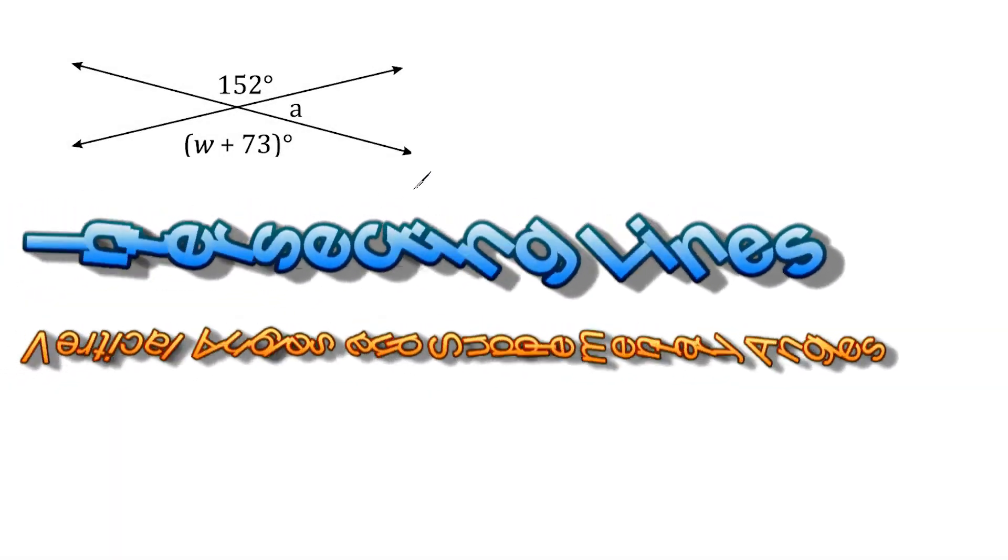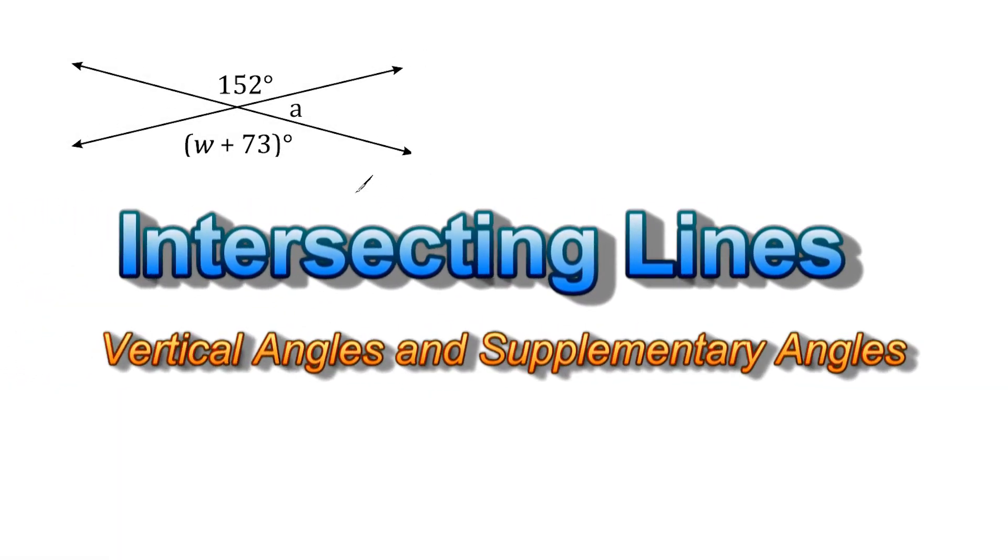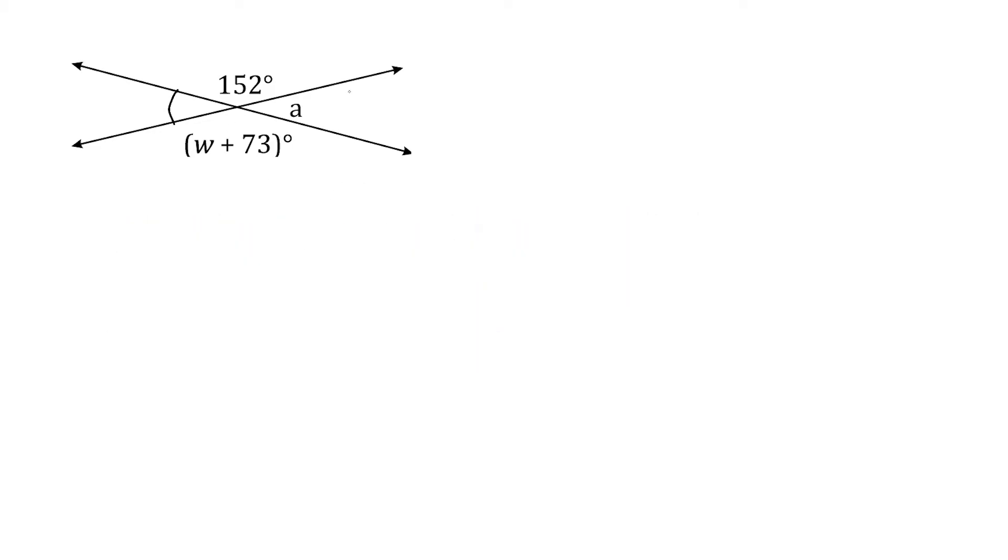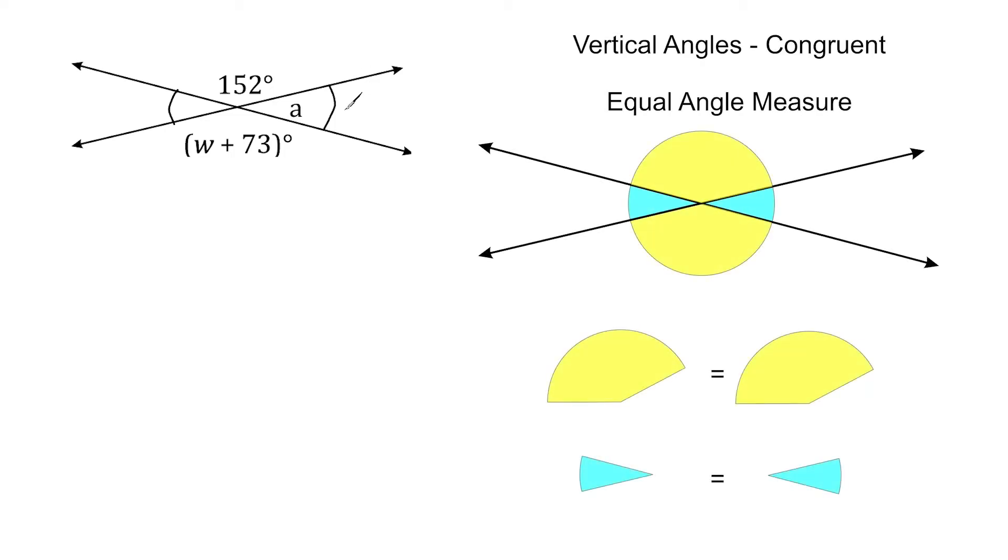All right, what we have here are a pair of intersecting lines, and whenever you have a pair of intersecting lines, four angles are formed. So we have one angle here, one angle here, and these angles are opposite from each other, and the angles that are on complete opposite sides are called vertical angles, and vertical angles are always congruent.